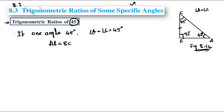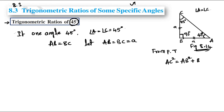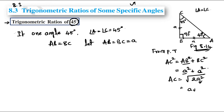Since angle A equals angle C, the two sides opposite them are equal: AB is equal to BC. Let AB equal BC equal to 'a'. From Pythagoras theorem, AC² = AB² + BC² = a² + a² = 2a². So AC = √(2a²) = a√2. This is the hypotenuse value.